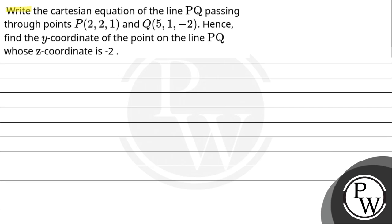Hello bachho, let's read the question. Write the Cartesian equation of the line PQ passing through points P(2, 2, 1) and Q(5, 1, -2). Hence, find the y-coordinate of the point on the line PQ whose z-coordinate is -2.